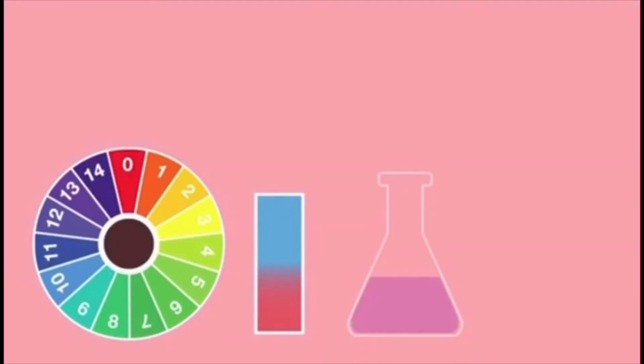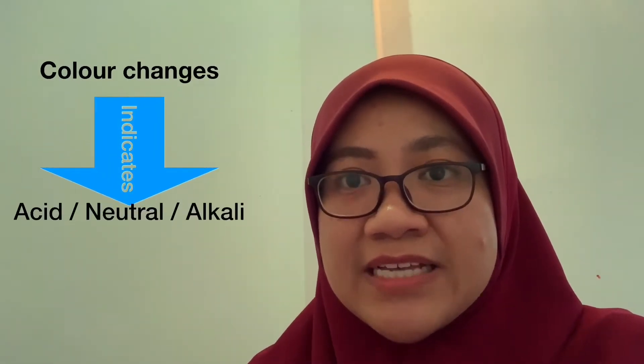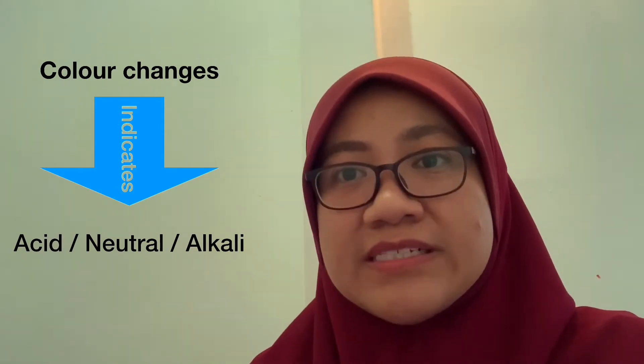Now let's talk about indicators. An indicator is a substance that has a distinct color and changes color when tested on either alkali or acid. The color change produced by the indicator can be used to determine whether the substance tested is acid, alkali, or neutral.